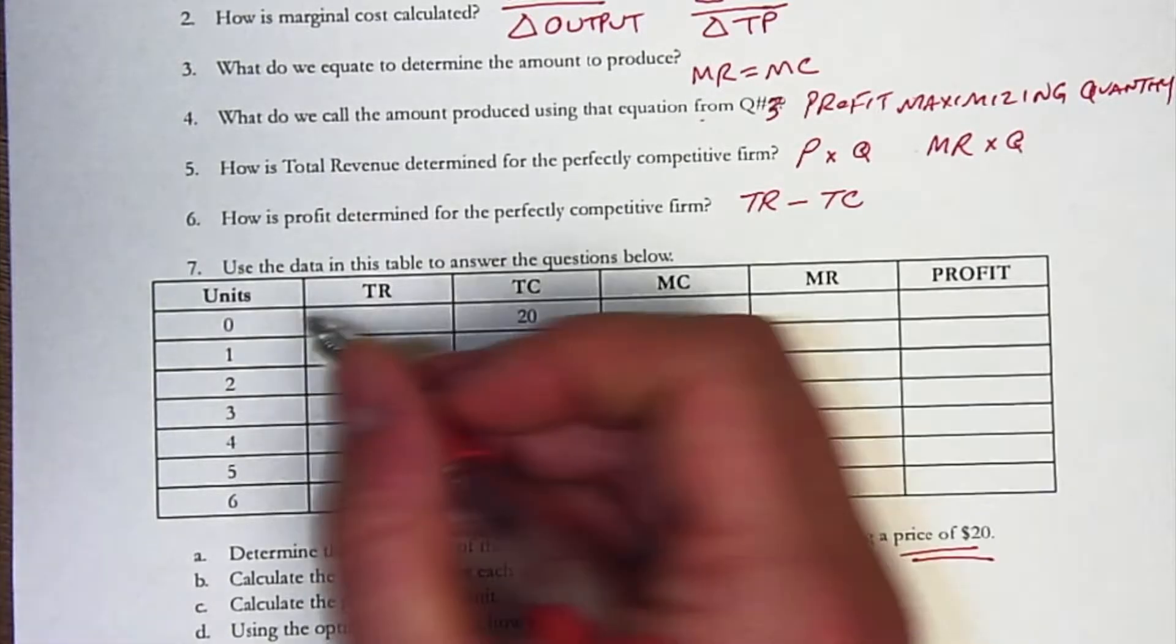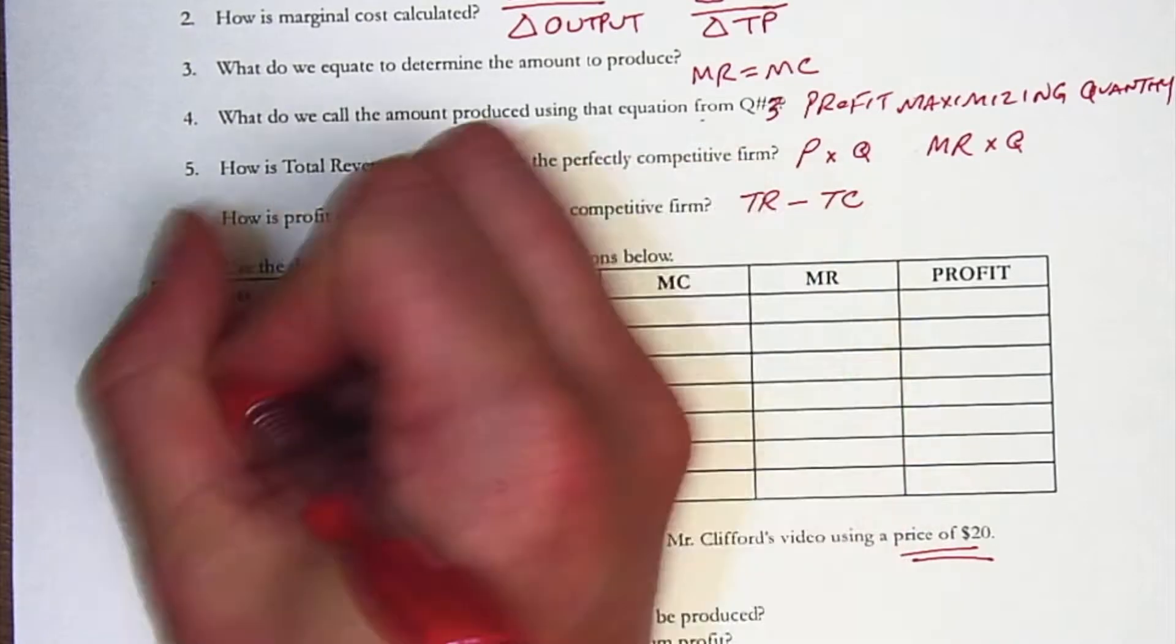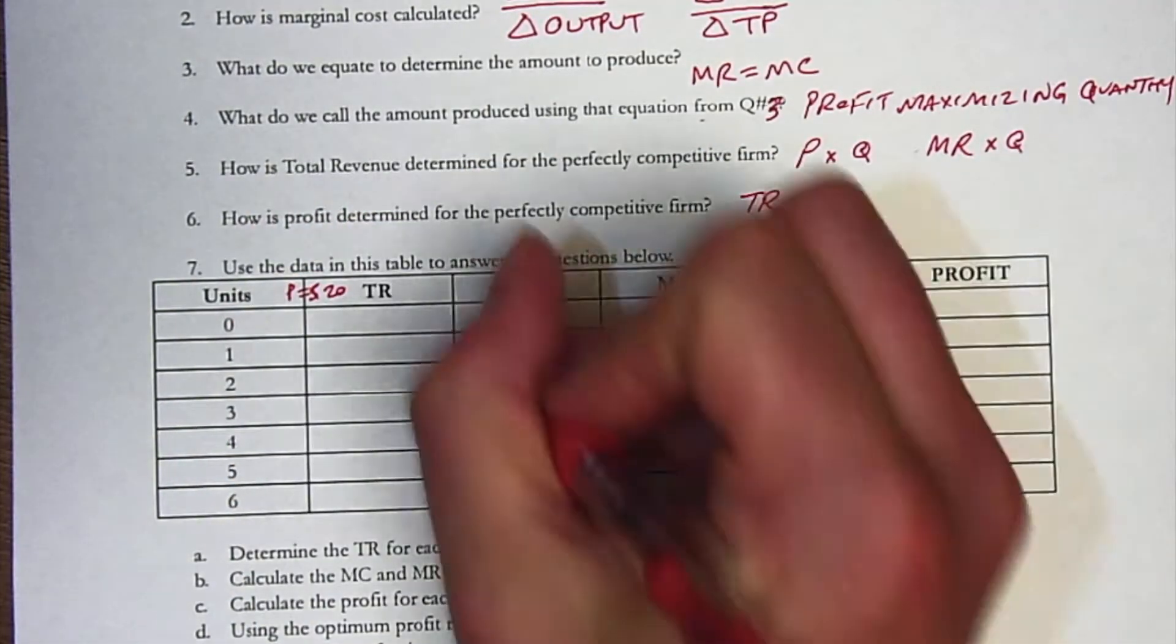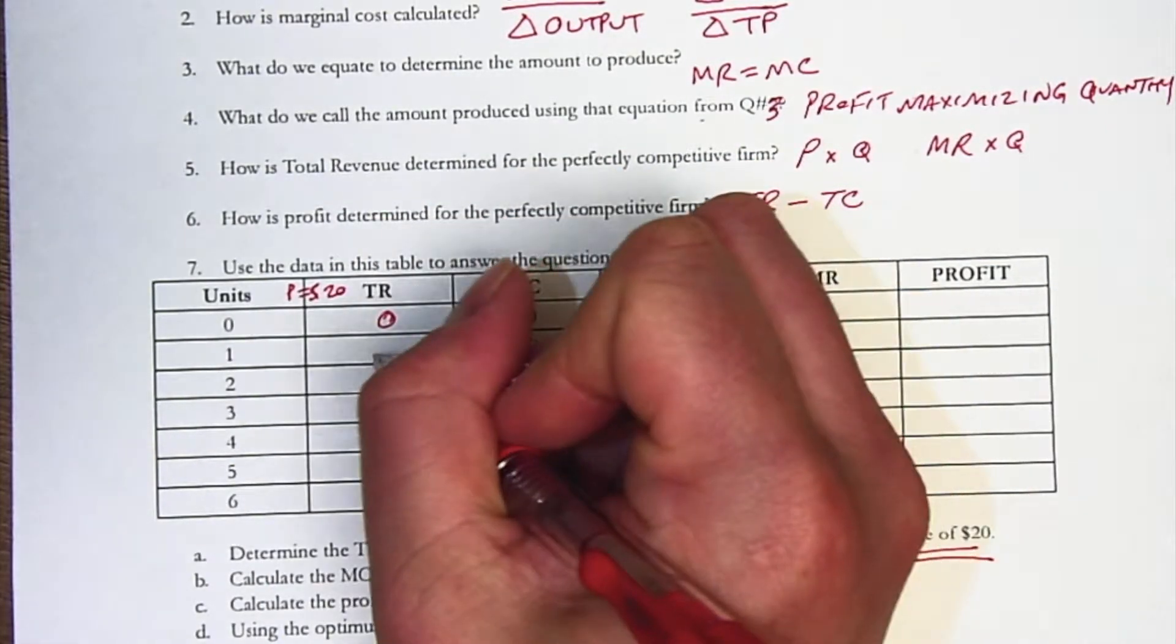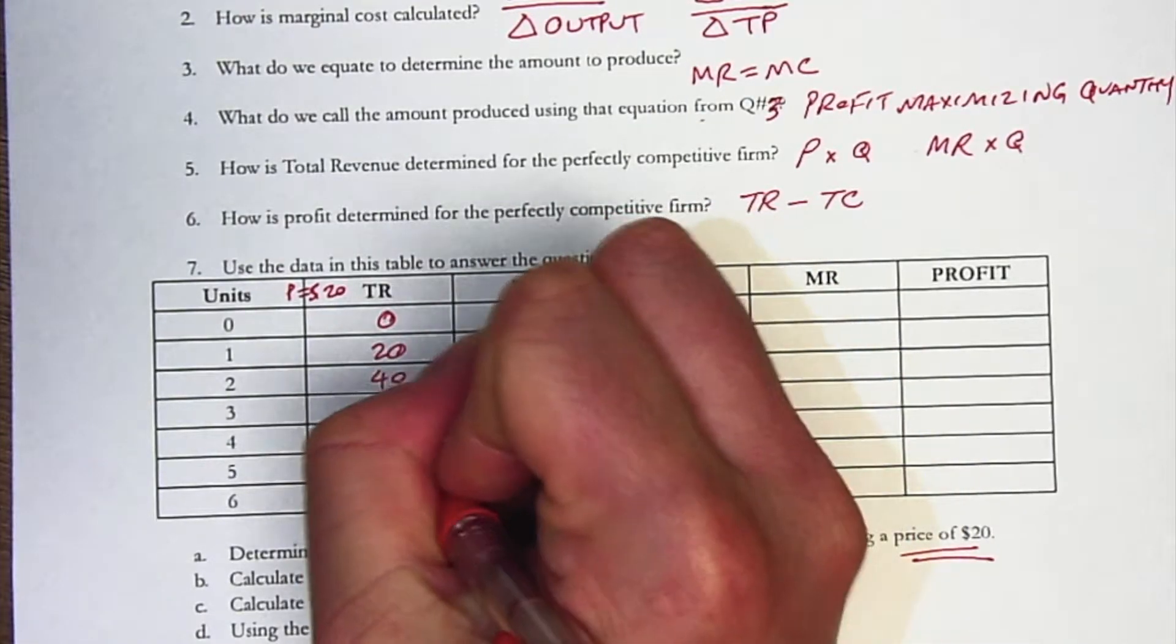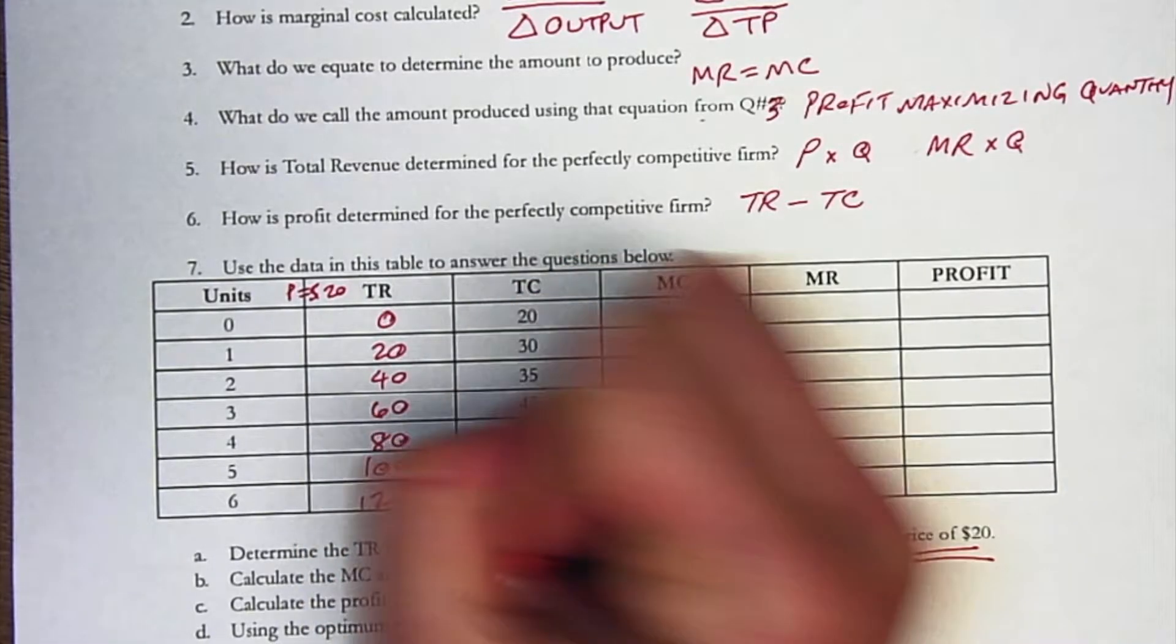The very first thing is that if we produce zero units at $20, 20 times zero is zero. 20 times one is 20. 20 times two is 40, then 60, 80, 100, and 120.